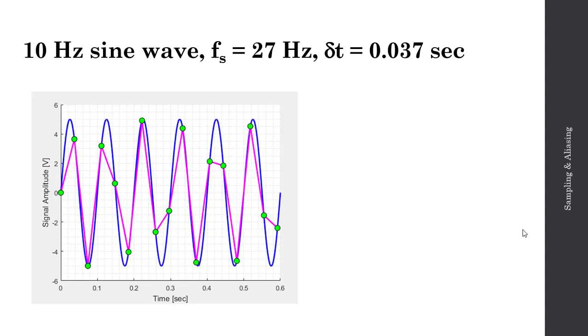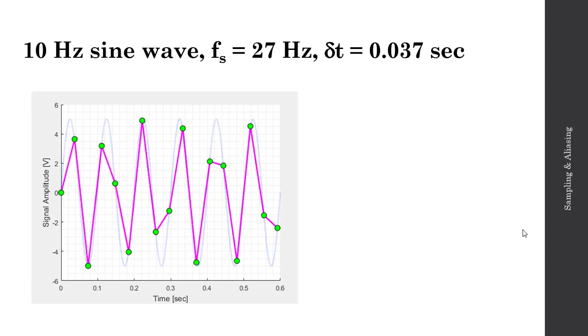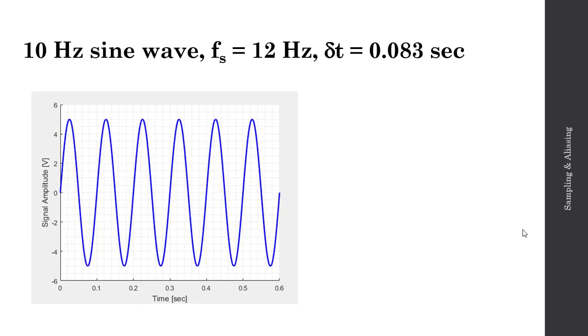I'm getting a peak or a valley corresponding roughly to the original 10 Hz sine wave. Now, let's slow things down even further. Let's go from 100 Hz down to 27, now down to 12 Hz sampling frequency. This corresponds to a sampling interval of 83 ms.